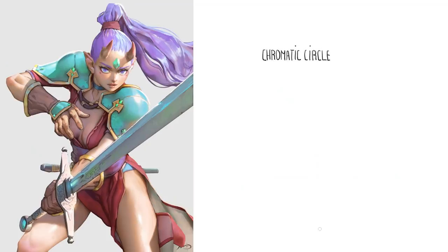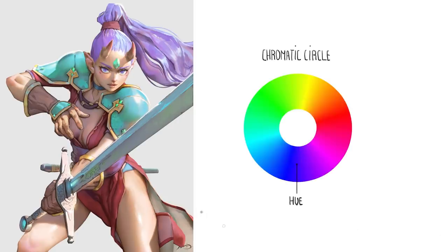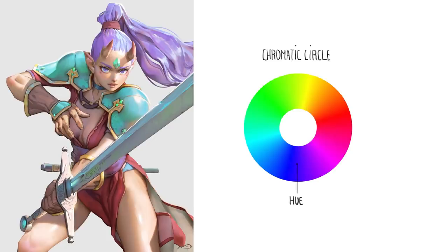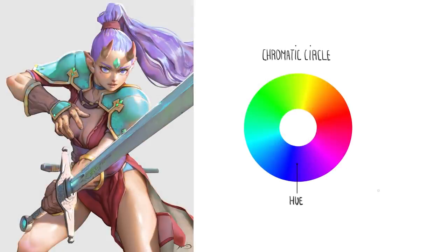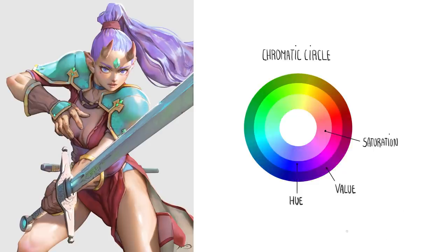First, when we talk color theory, we gotta get on the same page regarding the basics. Let's start with the chromatic circle. This is the chromatic circle, and it's specific to the colors of light for digital art. Here we have all the colors of the rainbow — this is what white light is made out of. You add all of these together and you get the color white. What we see here is only a fraction of all colors we're able to use in art, because it only represents the hue. The hue is one of three properties of colors. The others are value and saturation. Very simply put, the value indicates how much black you're mixing in with the colors.